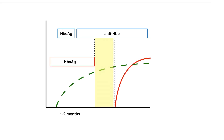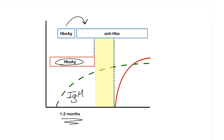Let's now go over the serologic course of hepatitis B. When a person first becomes infected with the virus, at around one to two months they will begin to develop serologic markers, which include the surface antigen — represented in this red box — as well as core antibodies, represented by the green line, particularly the IgM antibodies because this is an acute infection. Shortly after the surface antigen forms, the person will also develop E antigens, which again indicates a high level of infectivity, and these can later seroconvert into antibodies against the E antigen.